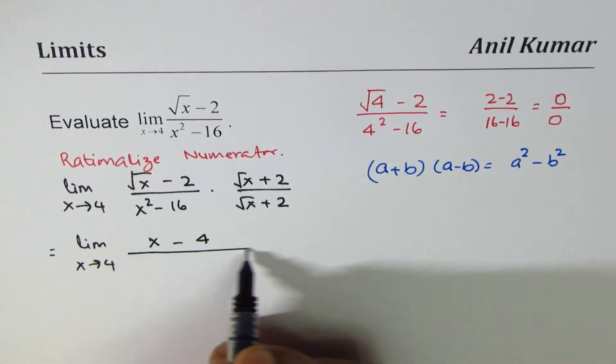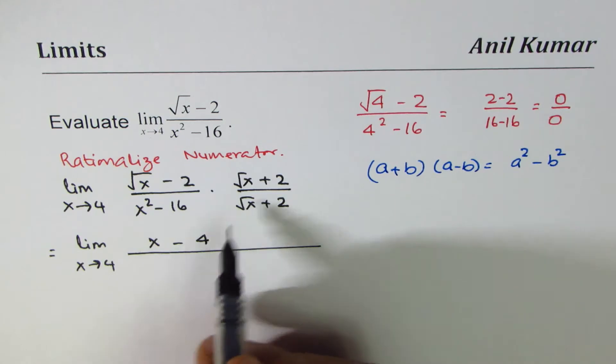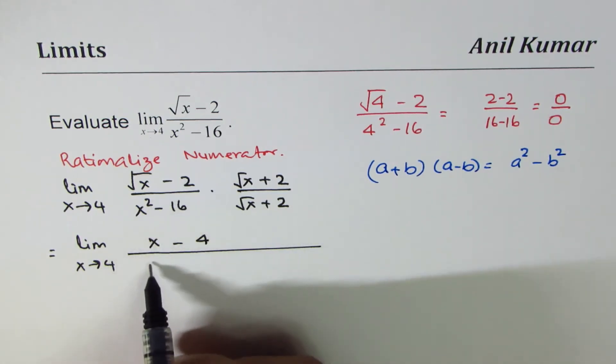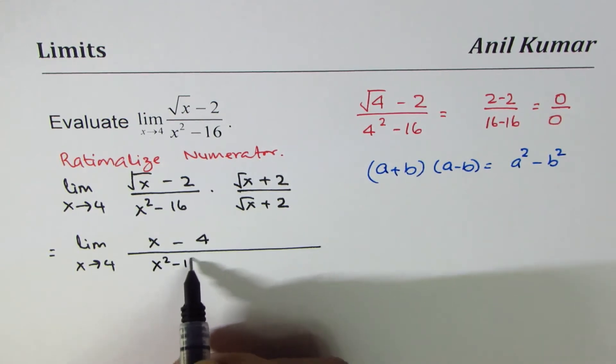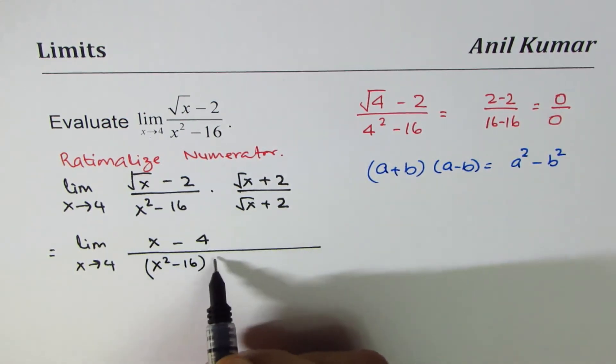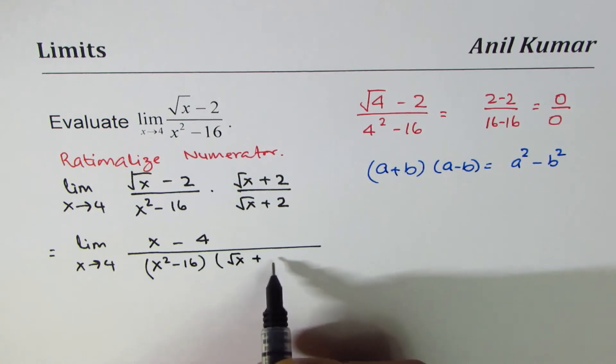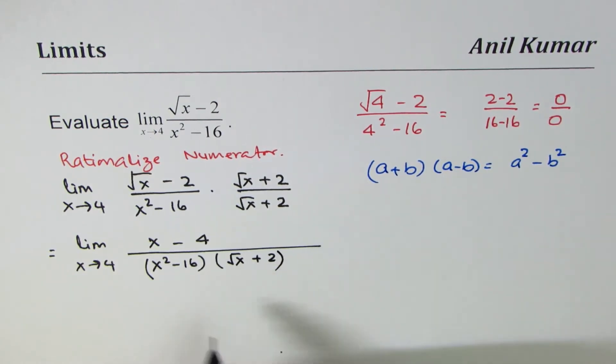And the denominator will be, when you multiply this, we get x squared minus 16 times square root x plus 2. Now as you can see, x squared minus 16 could be factored.